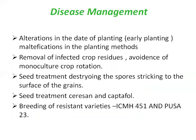For disease management: alteration in the date of planting, particularly early planting, and modifications in the planting method are recommended. Removal of infected crop residues and avoidance of monoculture through crop rotations are also advised. Seed treatment to destroy spores sticking to the surface of the grains is important. Breeding of resistant varieties — ICMH 451 and PUSA 223 — are highly recommended for controlling this disease.